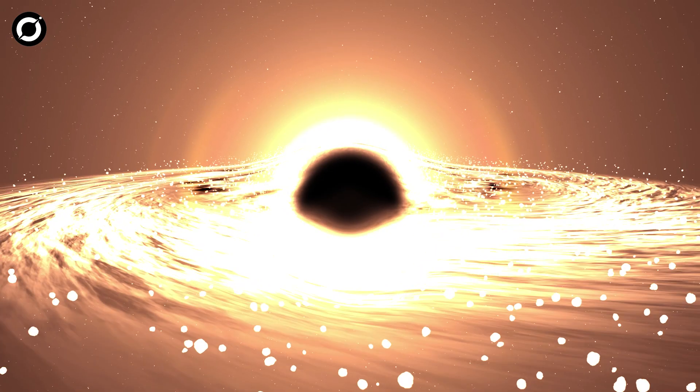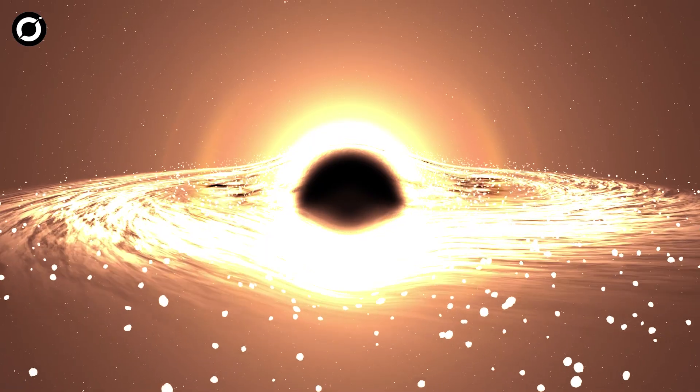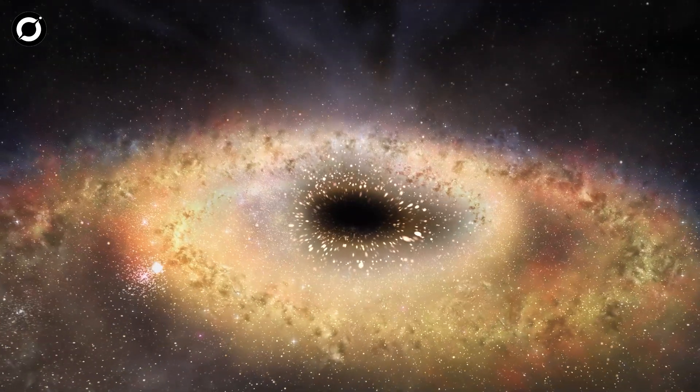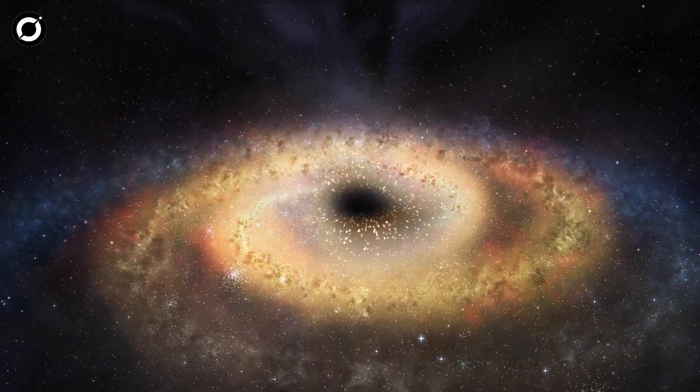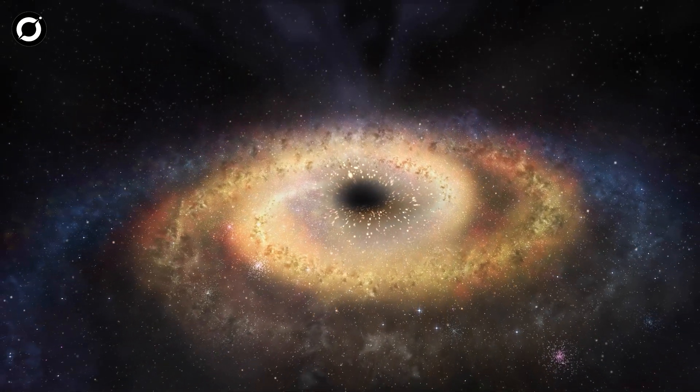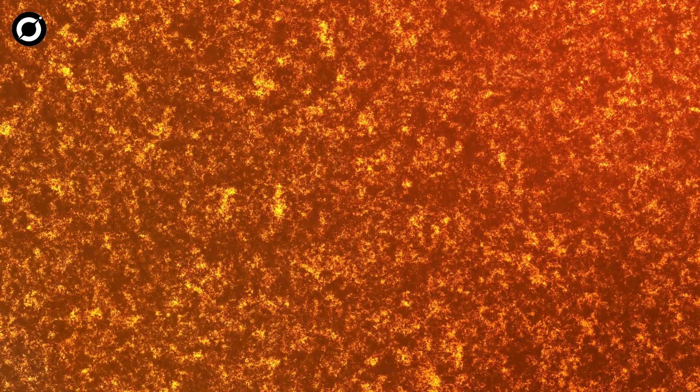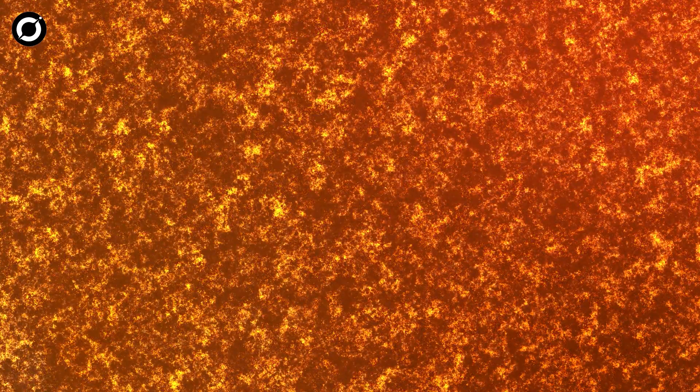As matter falls toward the black hole, it gets hotter and brighter. An actively feeding black hole, like the one in the pupil of Sauron's eye, is one of the brightest things in the universe. Against that blazing background, it's hard to pick out mere starlight.